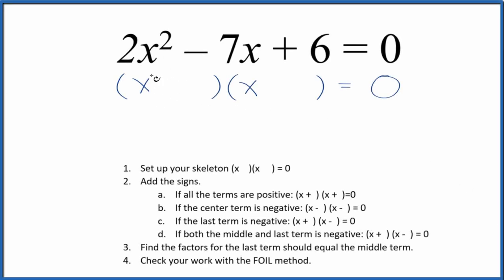If you need to factor the equation 2x² - 7x + 6, here's how you do it. First off, we need to set up a skeleton equation like this, but we need to take into account the 2 here. So let's move the x over and write in 2. Now we can add the signs to our skeleton equation.